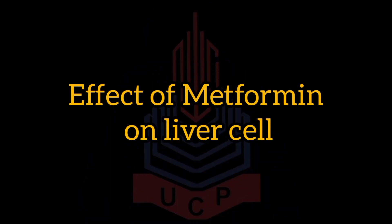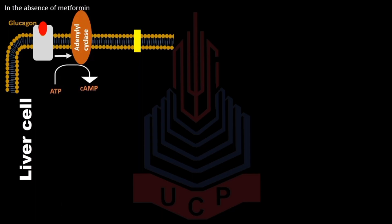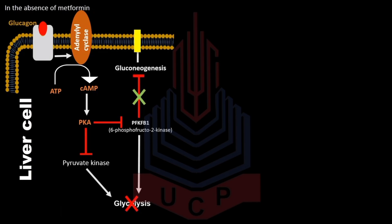First, the effect on liver cells in the absence of metformin: glucagon binds its receptor and activates the enzyme adenyl cyclase. The activated enzyme produces the second messenger cyclic AMP using cellular ATP. Cyclic AMP then activates protein kinase A (PKA). Activated PKA binds and inhibits two enzymes — pyruvate kinase and 6-phosphofructose-2-kinase — which are responsible for glycolysis. The inactive form of these enzymes fails to catalyze glycolysis, and inactive PFK2B1 is unable to control gluconeogenesis, leading to increased blood glucose levels.